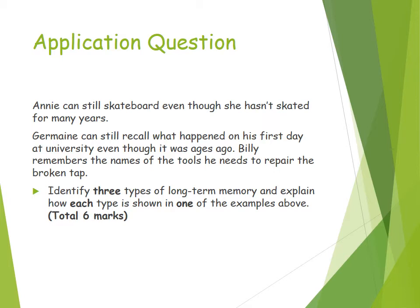You might also get an application question, where you use your knowledge of the types of memory and apply it to a novel situation. For example: Annie can still skateboard even though she hasn't skated for many years. Jermaine can still recall what happened on his first day at university even though it was ages ago. Billy remembers the names of the tools he needed to repair a broken tap. Identify the three types of long-term memory and explain how each type is shown in one of the examples.